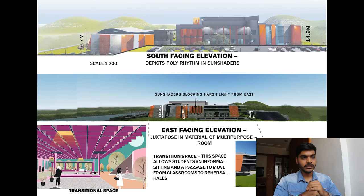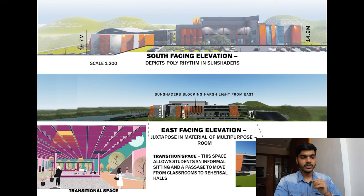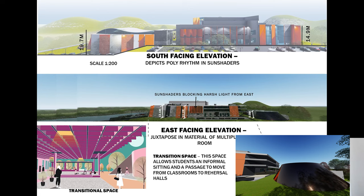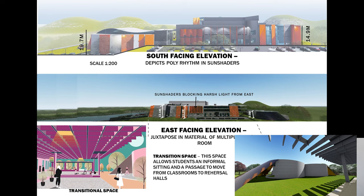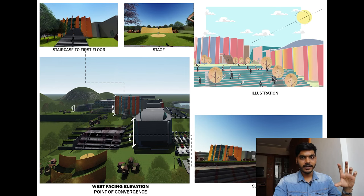The south-facing elevation depicts a polar rhythm in the sun shaders. Sun shaders are blocking harsh light from the east. Next, the east-facing elevation shows juxtaposition in material of the multi-purpose rooms. The transition space allows students informal seating and passage to move from classrooms to rehearsal rooms. The multi-purpose rooms are circular, shorter, and have different materials — I took from what I learned in the case study. The west-facing elevation shows the staircase to the first floor stage and sun shaders. The north-facing elevation doesn't have as much height.